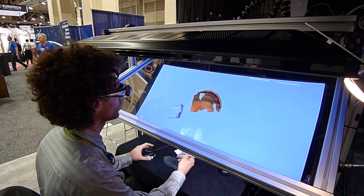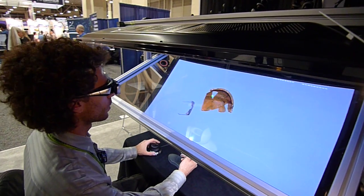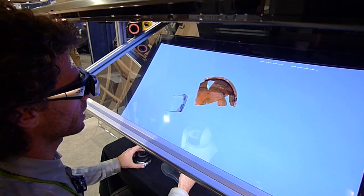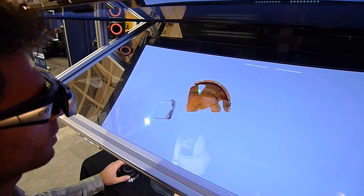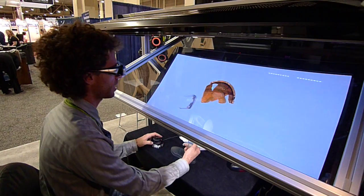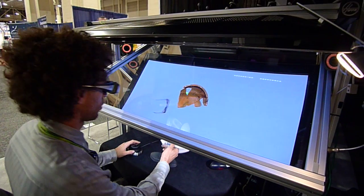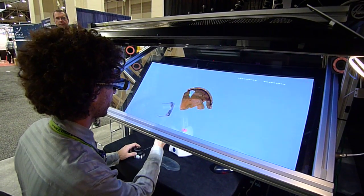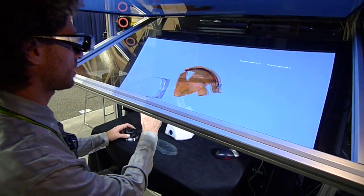We're here at the Cows booth at Supercomputing 2010. We're looking at a new augmented reality system called Hover, which stands for Heads Up Virtual Reality. The head-tracked VR environment includes haptic and 3D stereo.